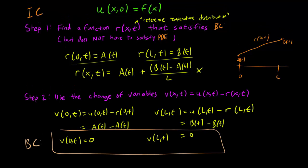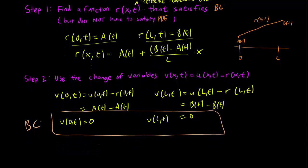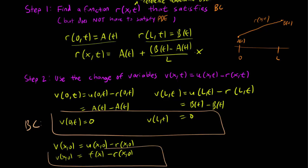The initial conditions also change in a nice way. We have u(x,0) equals f(x). So v(x,0) is equal to u(x,0) minus r(x,0). And this is going to be equal to f(x) minus r(x,0). So this is our new initial conditions. And it also seems not too different.